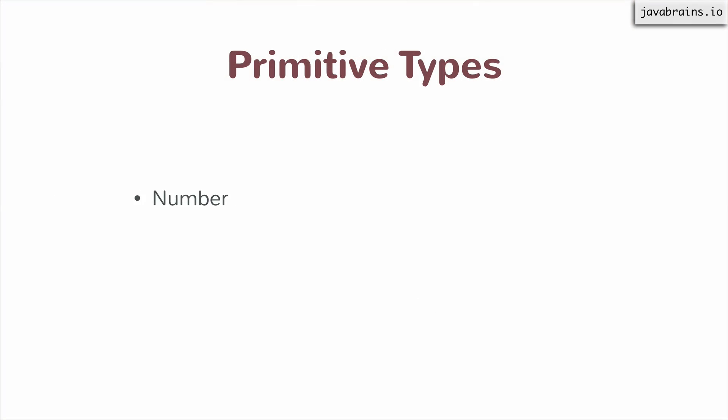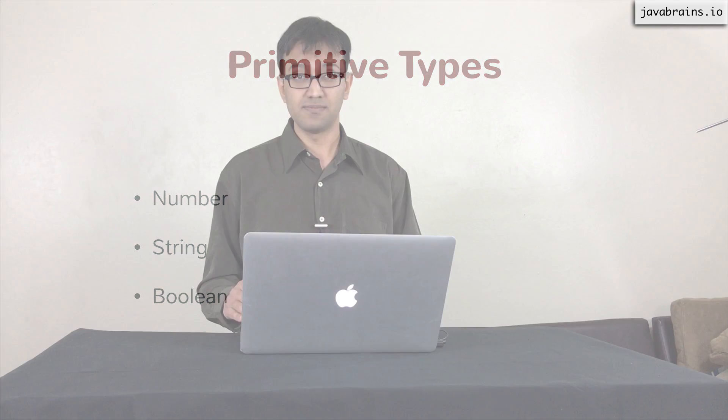Some of the standard types are number, which is a very common type in most programming languages. There's also string, which is fairly common — it's for text. And then there is a Boolean, which has the values true and false. These are common primitive types that exist in a lot of different languages.